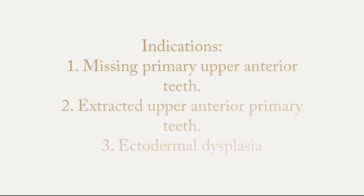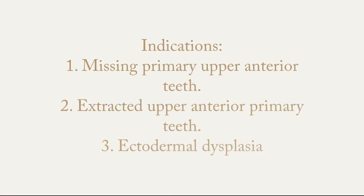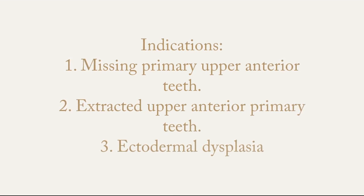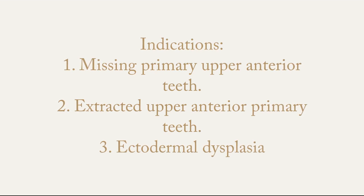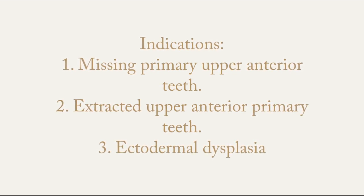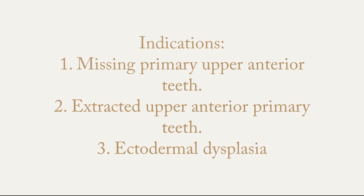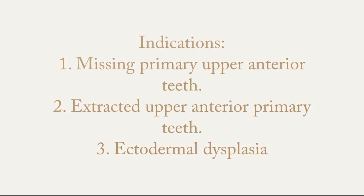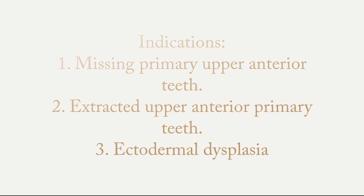The indications in this case are: first, for missing primary upper anterior teeth that have not erupted yet — this is one indication in order to maintain the space for the permanent dentition. Second, if we need to extract the upper anterior primary teeth because they are in bad condition, we place the kiddie partial denture to save the space for the permanent teeth.